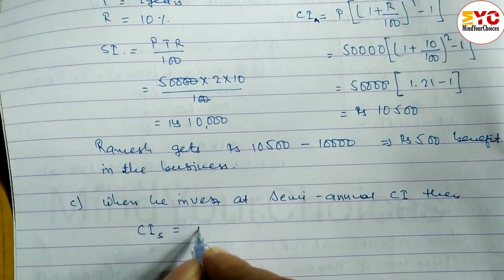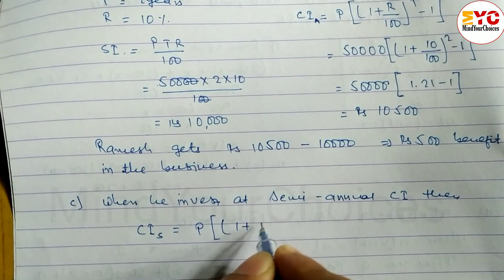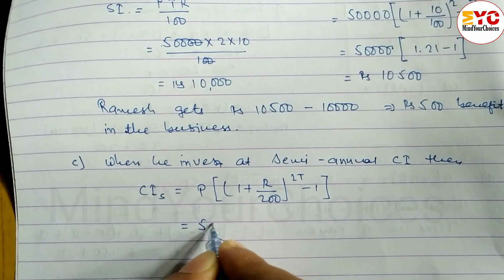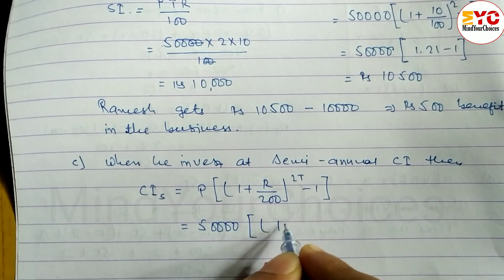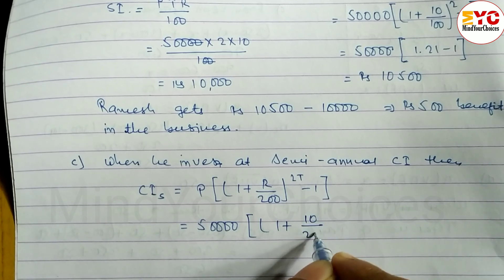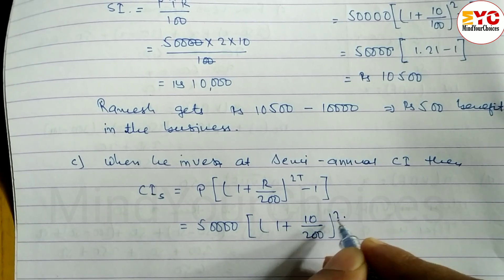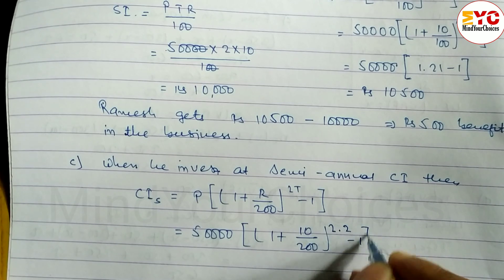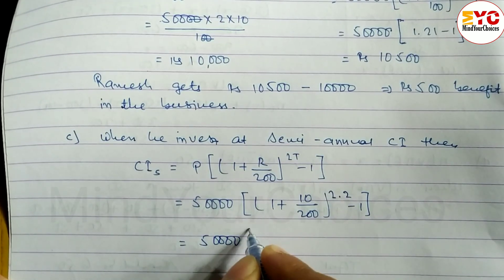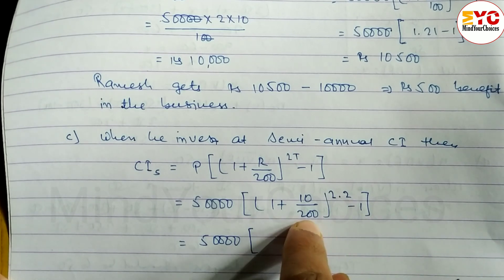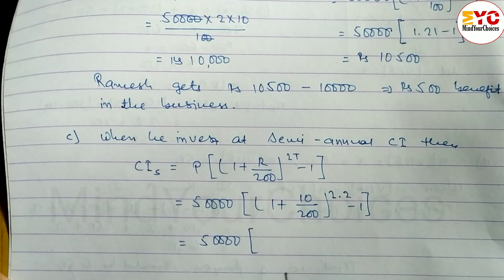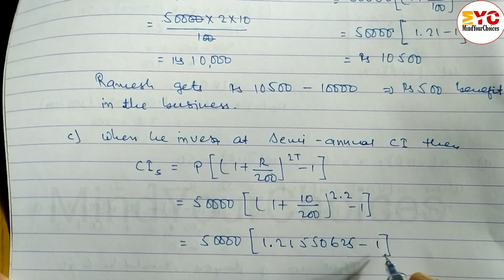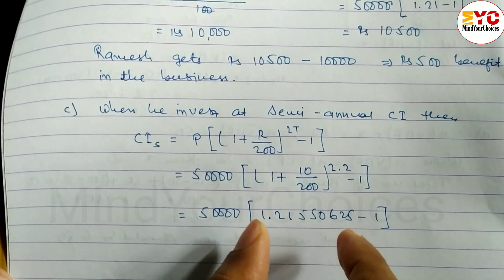The formula for semi-annual compound interest is: CI = P times (1 plus R divided by 200) power 2T, minus 1. P value is 50,000, R is 10, so 10 divided by 200. Time is 2 years, so power is 2 into 2 equals 4. We calculate: (1 plus 10/200) to the power 4, which gives 1.21550625. So 0.21550625 times 50,000.